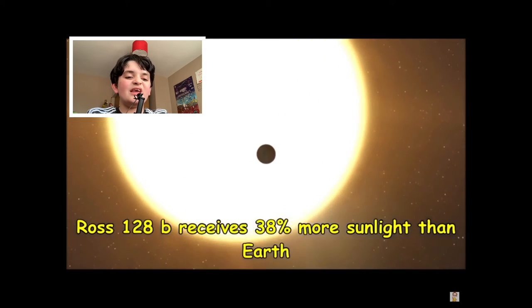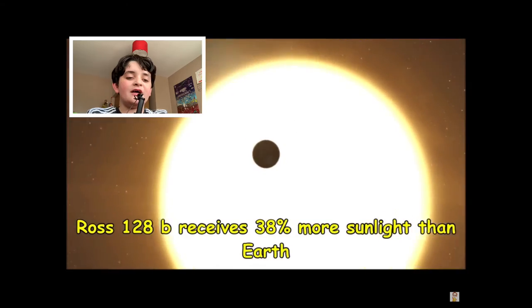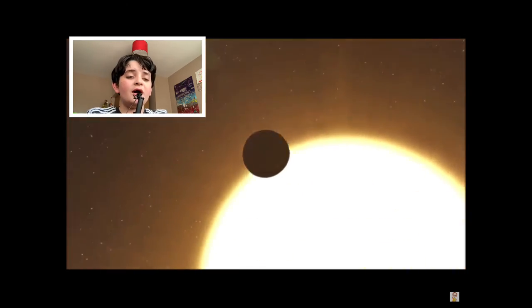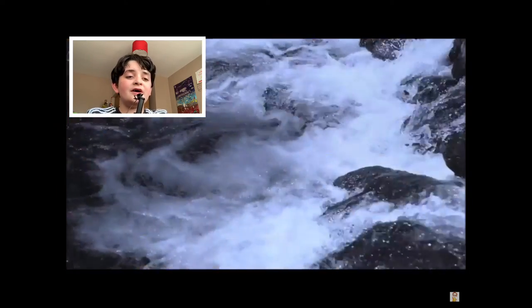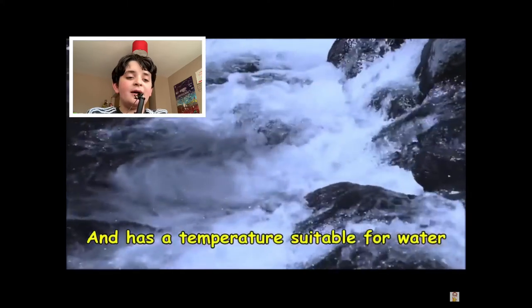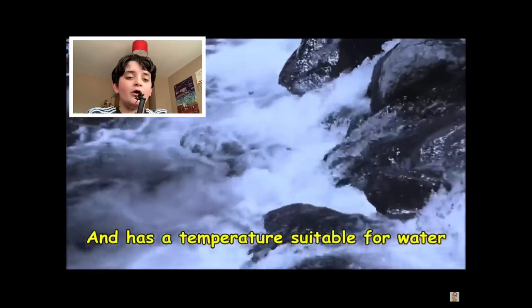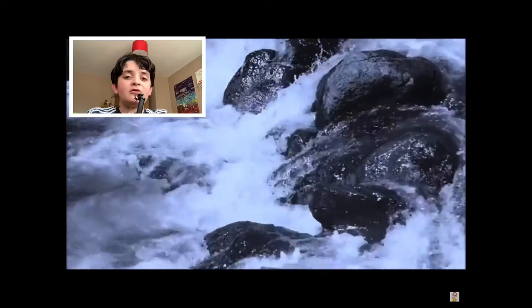Ross128b receives 38% more sunlight than Earth. I wouldn't want to go there, I'd be blinded every day. And it has a temperature suitable for water. There could be alien fish in the water, like the only species and stuff.